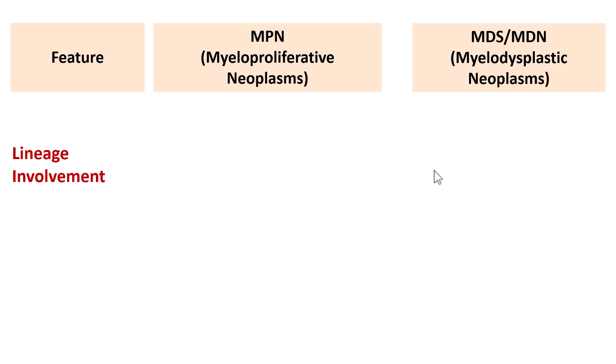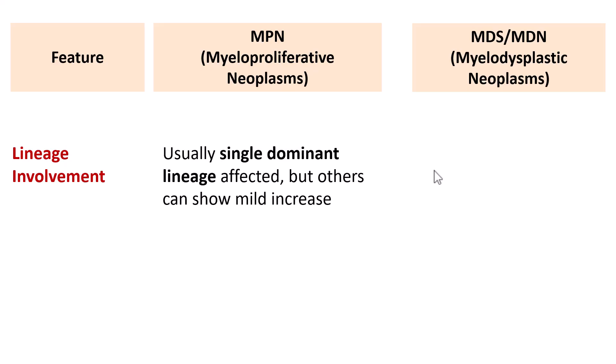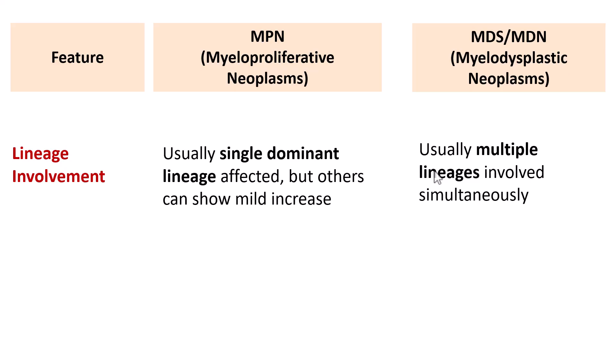Regarding lineage involvement, in Myeloproliferative Neoplasms, usually a single lineage is predominantly affected — if the myeloid lineage increases it is CML, if erythroid it is polycythemia vera, and so on. Other lineages can show mild increases as well. Whereas in Myelodysplastic Neoplasms, usually more than one — multiple lineages — are involved simultaneously. That is a very important distinction.